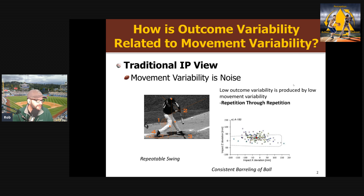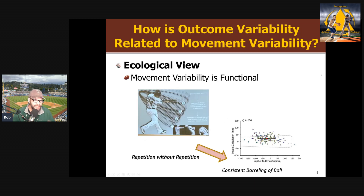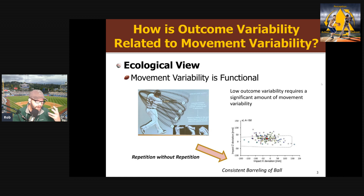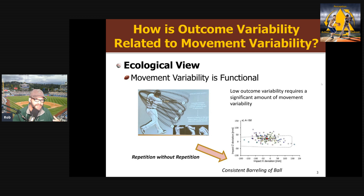The alternative is the ecological view, where we don't think about movement variability as noise — we think about it as essential to success; it's required, it's functional. The idea here is that in order to achieve consistent barreling of the ball, not only are we going to use movement variability, it's required, because the situation is always changing — the pitch is changing, the constraints are changing. We need to adjust the position of our body to hit pitches at different heights. So consistent outcome variability in the ecological view requires some level of movement variability — that's the idea of repetition without repetition: we repeat our outcome, but not by repeating our movement.